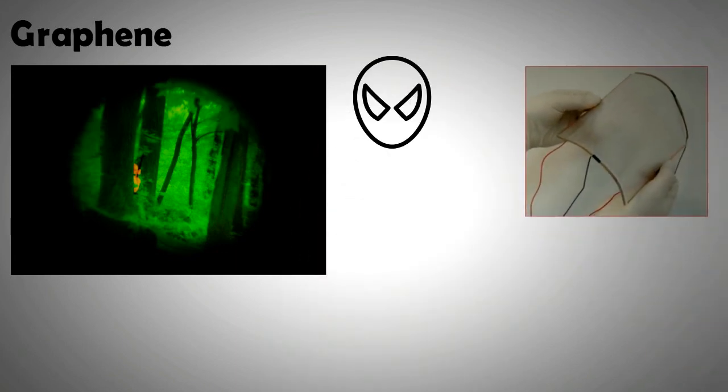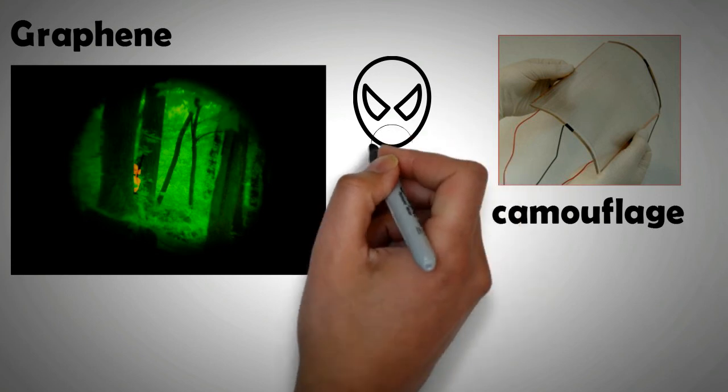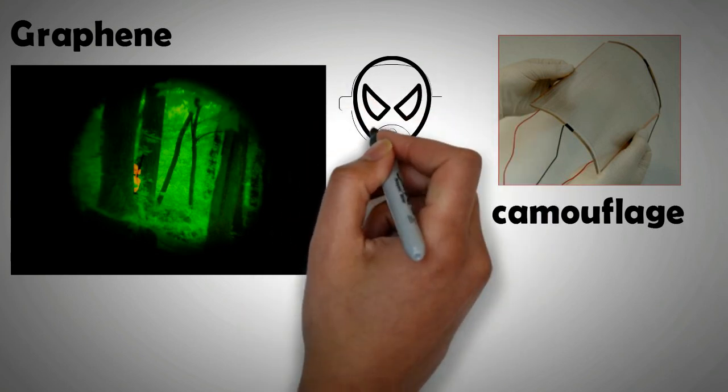The miracle material graphene can be used to add more capabilities to the suit. For instance, it can give the suit a cloaking ability. It can provide camouflage and this technology of using graphene for camouflage is already well established. Furthermore, graphene can also be used as an air filter to protect from chemical weapons.